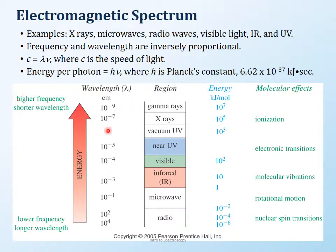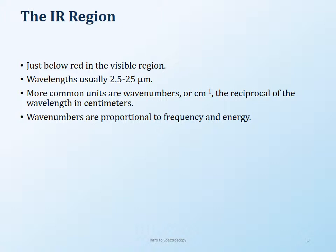The IR region is going to be near the red region of the visible spectrum — infrared means near the red. The wavelength is usually 2.5 to 25 micrometers. We're going to talk about wave numbers, which are directly proportional to frequency and energy because wave number is one over centimeter. One over centimeter — the inverse of wavelength — is also related to frequency, so it's a direct correlation.